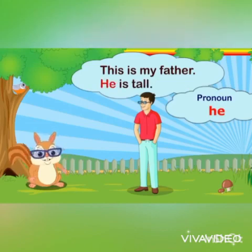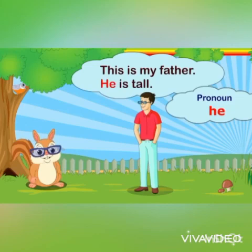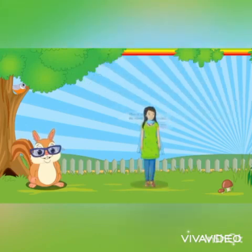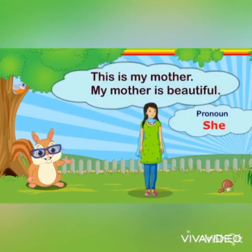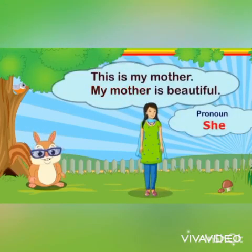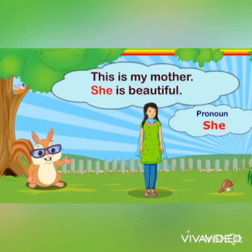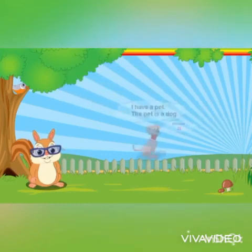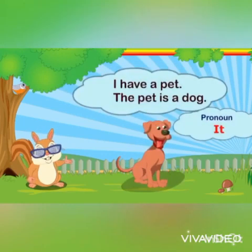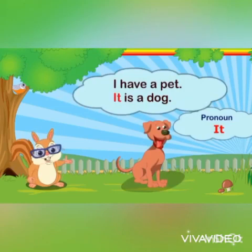Let's have another example. This is my mother. My mother is beautiful, so we'll replace it with the pronoun 'she.' She is beautiful. I have a pet, and we replace 'the pet' with the pronoun 'it.' It is a dog.